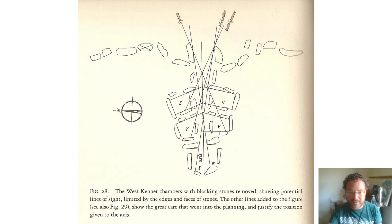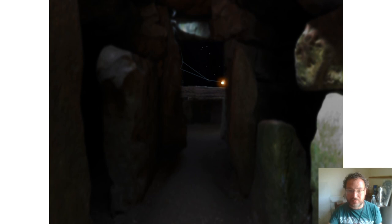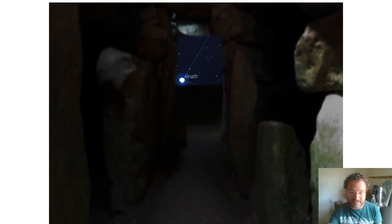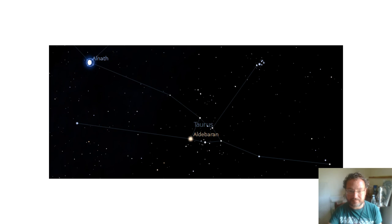So the chamber itself at West Kennet, you have five chambers pointing towards, in North's view, the Pleiades and Betelgeuse in Orion. So this would be the view from the chamber, Betelgeuse, and this towards also towards Alnath, which is the horn in Taurus.